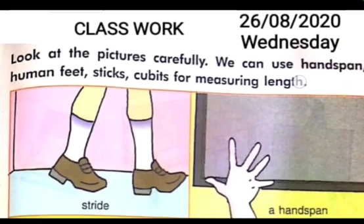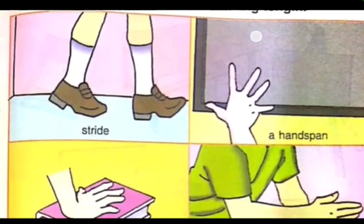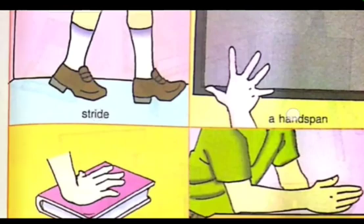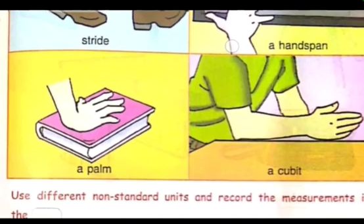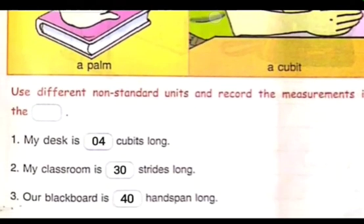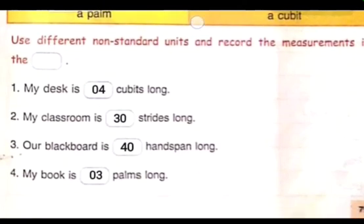This is your classwork. Look at the pictures carefully. We can use handspan, human feet, sticks, and cubits for measuring length. Use different units and record the measurement in the box. My desk is four cubits long. My classroom is thirty strides long. Our blackboard is forty handspans long. My book is three palms long.